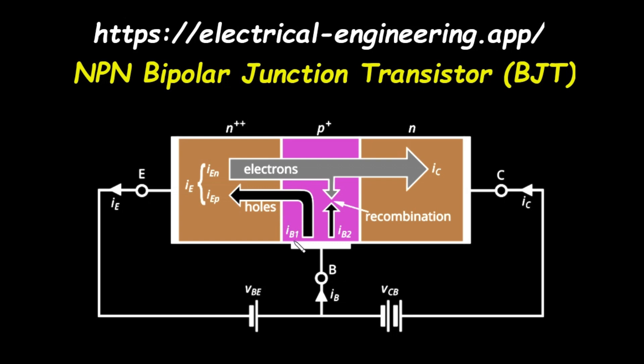The total current flowing out of the emitter terminal, which we call I_E, is the sum of these two components. So, I_E equals I_En plus I_Ep. Because the emitter's doping is so much heavier than the base's, the electron current I_En is significantly larger than the hole current I_Ep. This is a deliberate design choice to make the transistor efficient.